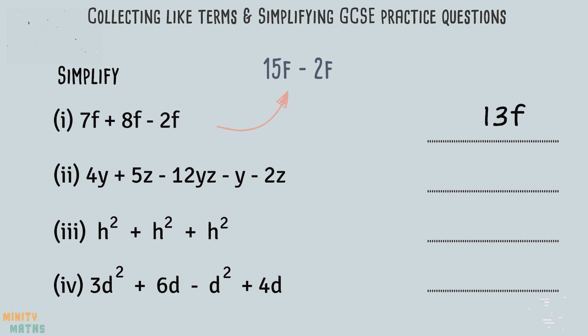In the second question, there are three different types of terms: y, z, and yz. Let's gather the like terms and simplify any that we can. Now all the terms that are remaining are different. We cannot add or subtract terms that are not like terms. Therefore, this expression is now in its simplest form.